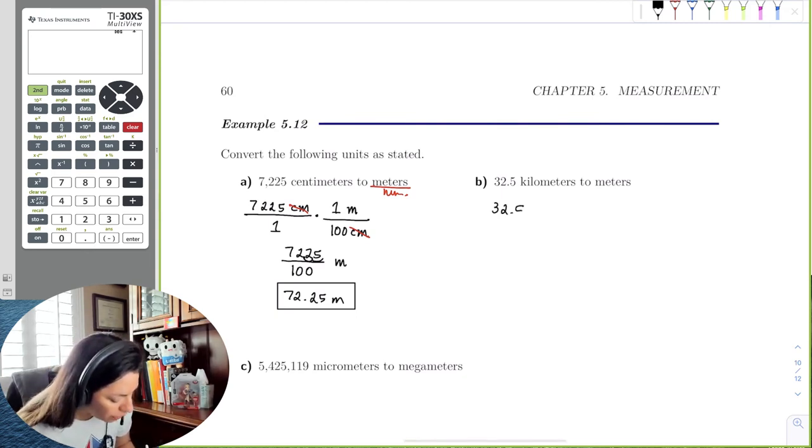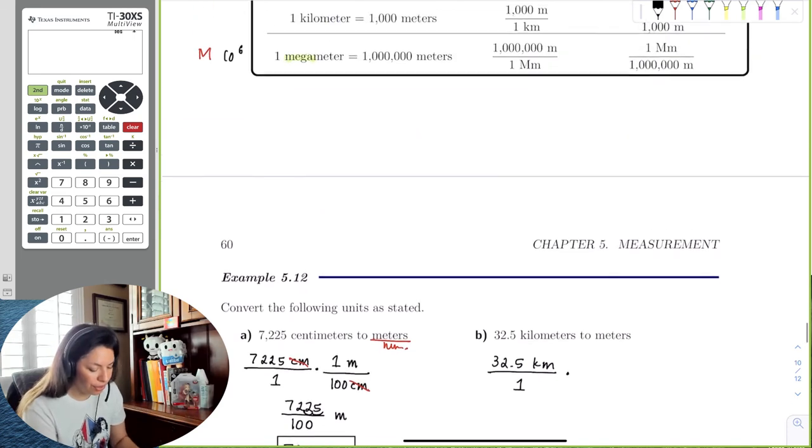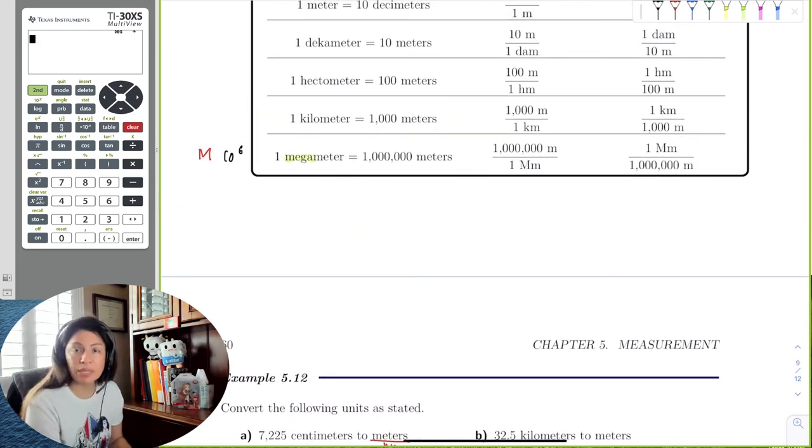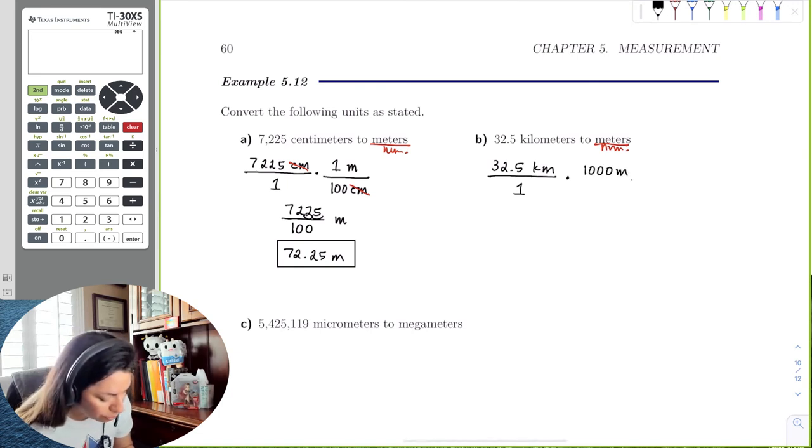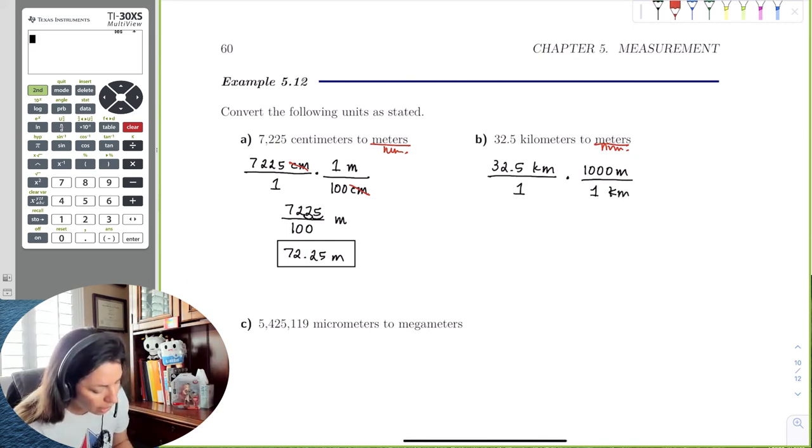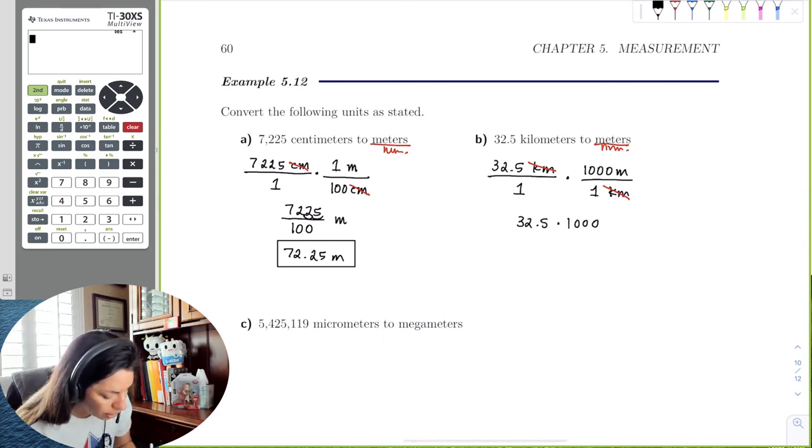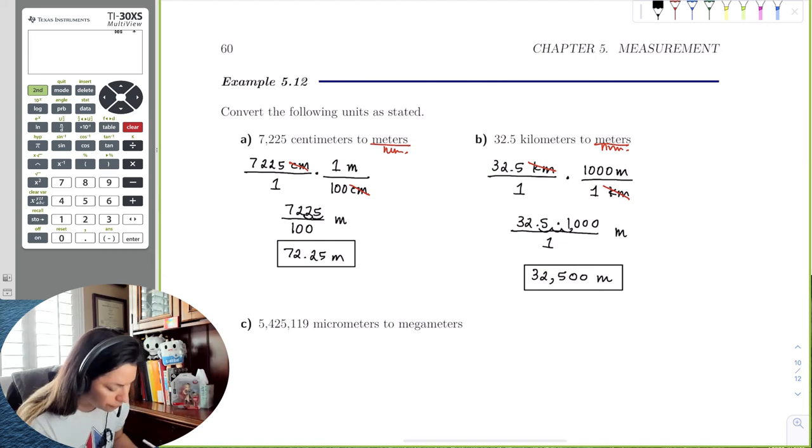Let's try this one. 32.5 kilometers, I'll put this over 1. Well, we know from up here that 1 kilometer is 1,000 meters. And if I need meters in the end, that has to be the numerator. So I know this is going to be 1,000 meters per 1 kilometer. We reduce those kilometers out and get 32.5 times 1,000 and then divided by 1 times 1, which is 1, and then we have meters in the end. We can just move this decimal over 3 times, 1, 2, 3, and we get 32,500 meters.